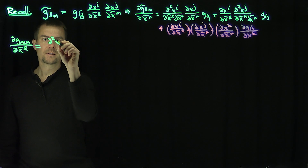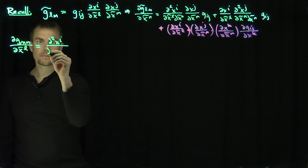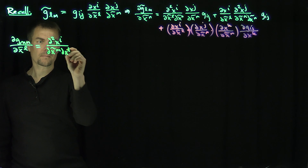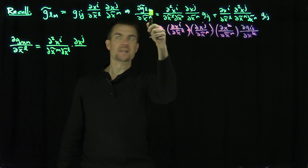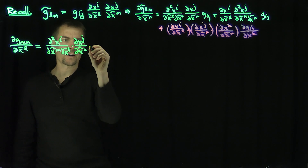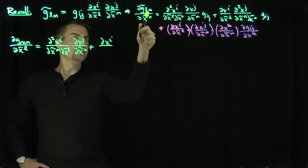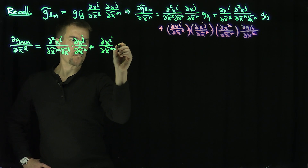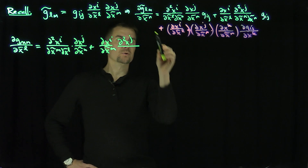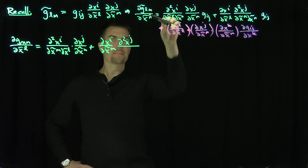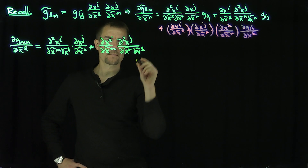For the first cyclic permutation — computing DG̃_MN/DX̃^L — the L and N in the original formula turn into M and L, while the M there becomes N. So we get D²X^I/(DX̃^M DX̃^L) times DX^J/DX̃^N times G_IJ, plus DX^I/DX̃^M times D²X^J/(DX̃^N DX̃^L) times G_IJ. Note I and J are dummy indices, as is K.